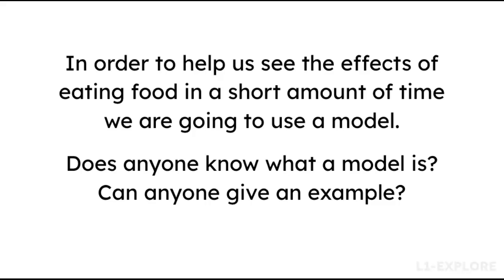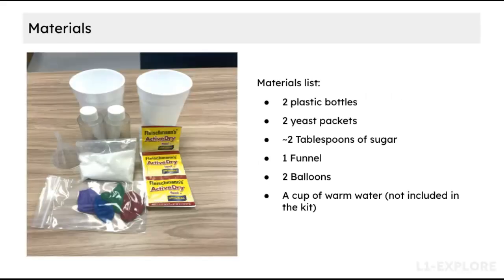You'll tell students that in order to help us see the effects of eating food in a short amount of time, they are going to use a model. You'll set up the yeast model demonstration activity using the instructions found in the Teacher Guide. You'll prepare two bottles of very warm water and take students through the steps of adding yeast to both, but sugar to one. Students will observe the bottles and whether or not attached balloons inflate. Pause this video here to review the list of needed materials and the items found in your kit for this activity.